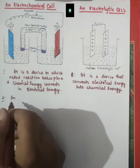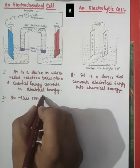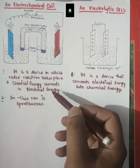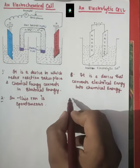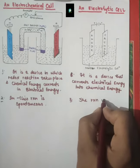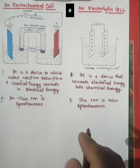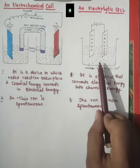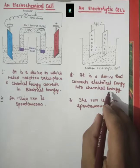The second difference: in the electrochemical cell, the reaction is spontaneous. Once the chemical reaction starts, it continuously converts and produces electrical energy. In the electrolytic cell, the reaction is non-spontaneous — the chemical reaction only occurs when electricity is supplied. Once the supply of electricity is cut off, the chemical reaction will not occur and chemical energy will not be produced.